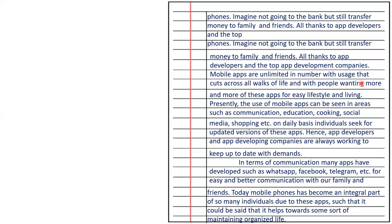Top app development companies have made mobile apps unlimited in number, with usage that cuts across all walks of life, with people wanting more and more apps for easy lifestyle and living. Presently the use of mobile apps can be seen in areas such as communication, education, cooking, social media, shopping, etc. On a daily basis, individuals seek updated versions of these apps. Hence, app developers and app developing companies are always working to keep up with demands.